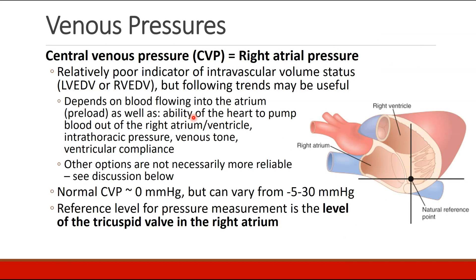We can also measure pressures on the venous side. The first is central venous pressure, or right atrial pressure. People have tried to use this as an indicator of intravascular volume status and as a surrogate for left or right ventricular end-diastolic volume, although it's a pretty poor indicator. Some may use it to follow trends. CVP really depends on blood flowing into the atrium — preload — as well as the heart's ability to pump blood out of the right atrium, intrathoracic pressures, venous tone, and ventricular compliance.